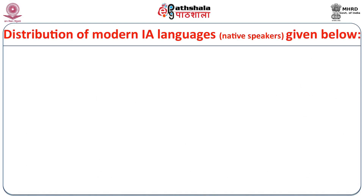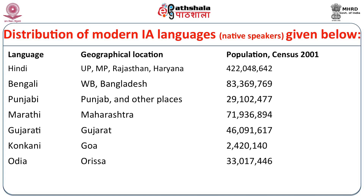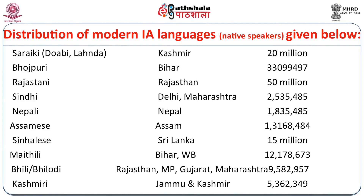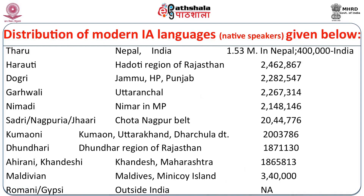Here, a distribution of modern Indo-Aryan languages and their inventory is provided. We can start from Hindi, Bengali, Punjabi, Marathi, Gujarati, Konkani, Odia, Saraiki, Lahanda, Bhojpuri, Rajasthani, Sindhi, Nepali, Assamese, Sinhalese, Maithili, Bhili, Bilodi, Kashmiri, Tharu, Harauti, Dogri, Garhwali, Nimadi, Sadri, Kumauni, Dhundari, Ahirani or Khandeshi, Moldavian, and Romani or Gypsy. These are some of the major languages of modern Indo-Aryan.